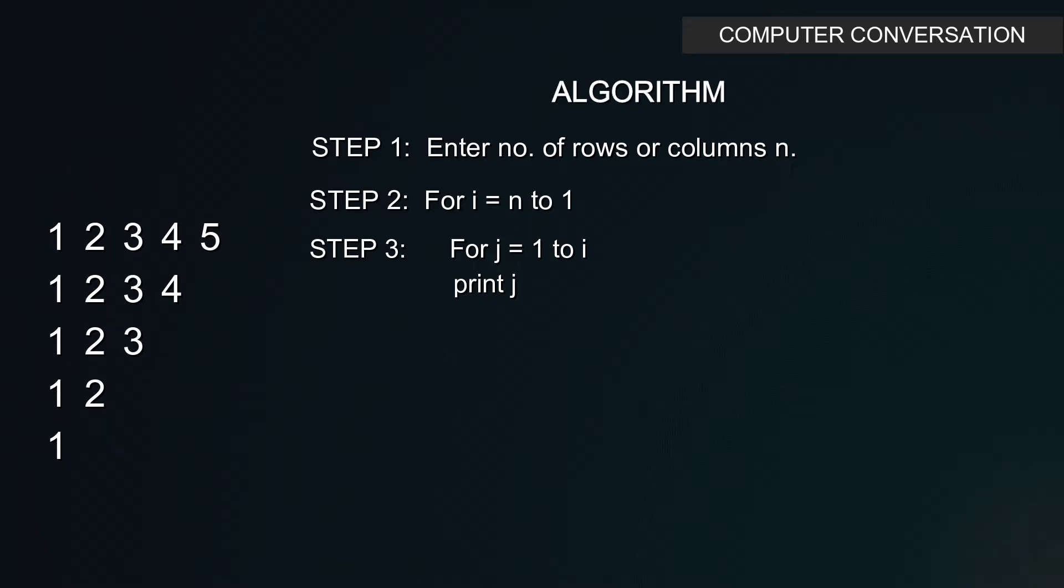Like this, when i is 1, 1 will be printed and the control will come out from the nested loop and execute the next statements. I hope you understood the thing. Now in step 4, close the braces of the inner loop if you have opened and write the statement for printing a new line. Then simply close another brace for the outer loop. In step 5, exit the program. That's the algorithm.